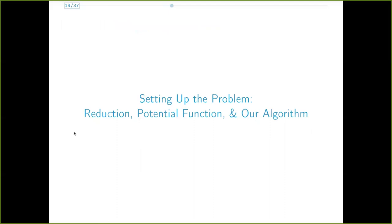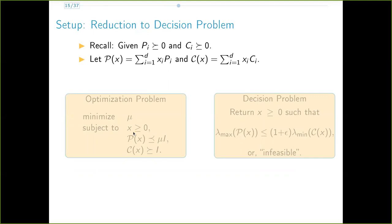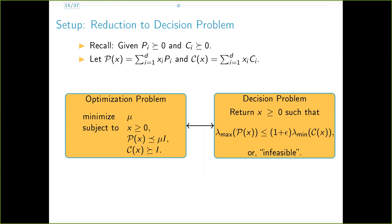We now provide our problem setup. Recall again that we are given these PSD packing and covering matrices. We now consider Tx and Cx as defined here. Then this optimization problem we have can be reduced to a decision problem by choosing different values of mu using a binary search. The epsilon is our accuracy parameter.